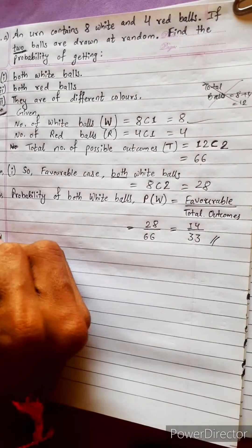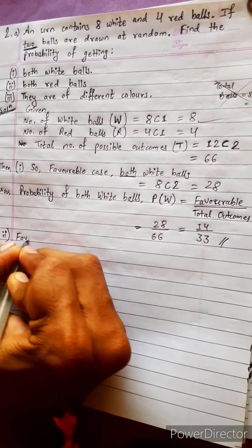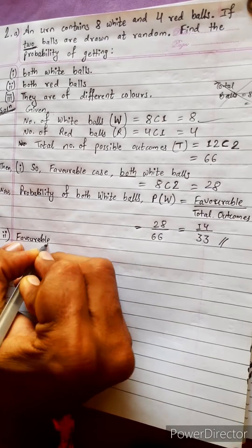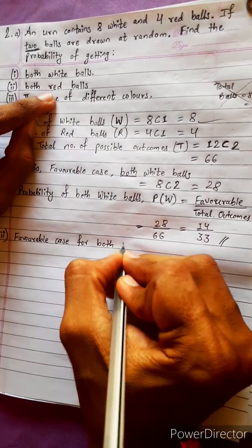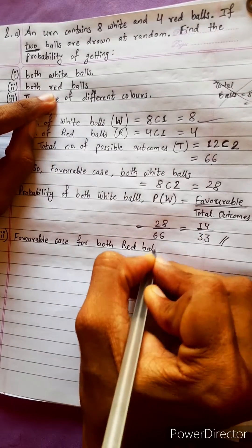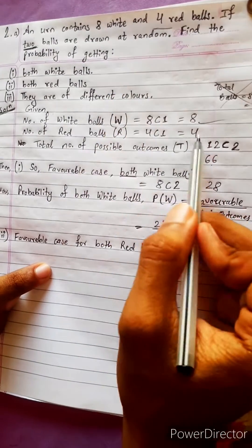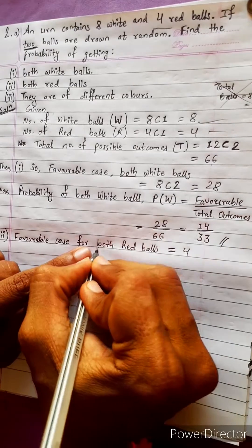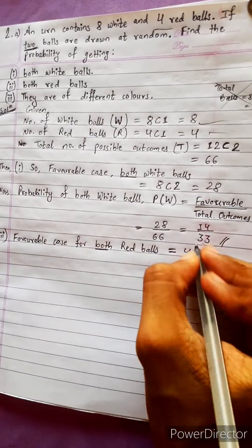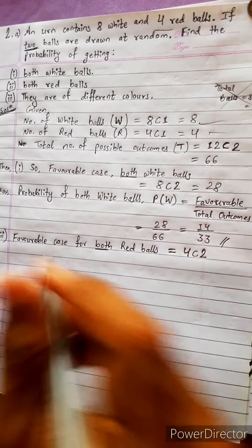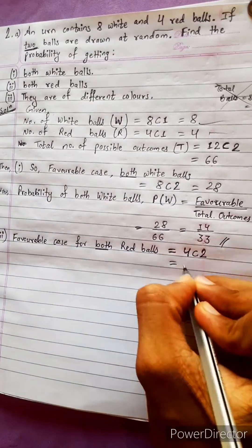Now for part two: both red balls. We need both red balls, so let's find the favorable case. How many red balls are there? There are 4 red balls. We need both red balls, so it combines with 2 — giving us 4C2. 4C2 equals 6, so the favorable outcome is 6.